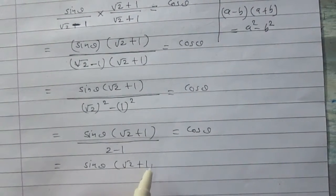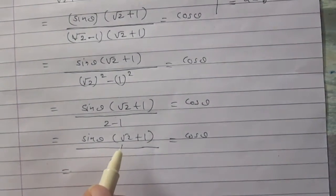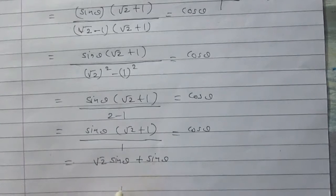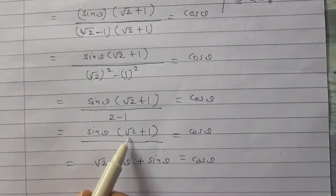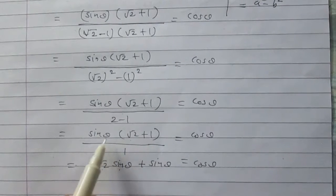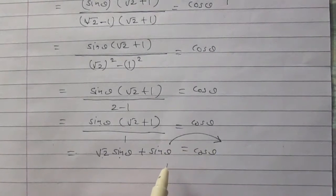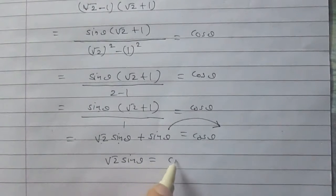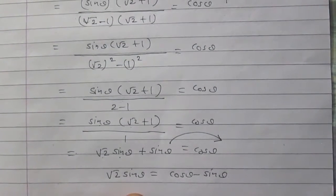This simplifies to square root of 2 sin θ plus sin θ equals cos θ, since sin θ is multiplied by both square root of 2 and 1. Now transposing sin θ to the right hand side, we get square root of 2 sin θ equals cos θ minus sin θ. This is exactly the result we wanted to prove.